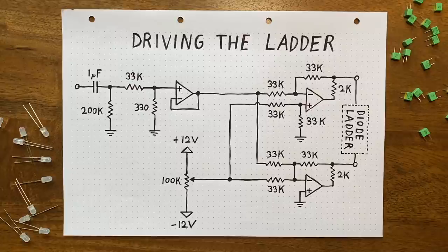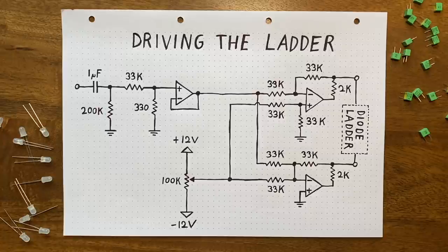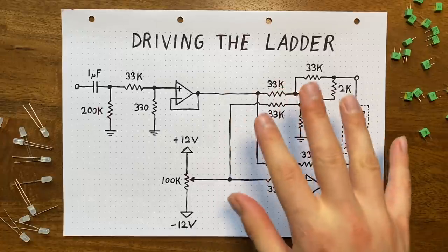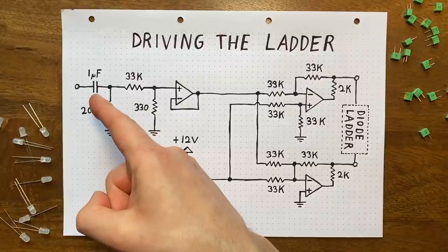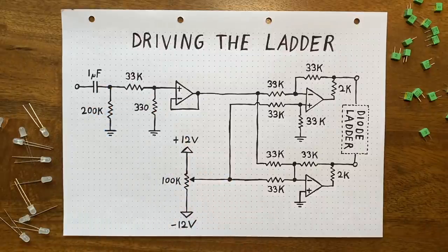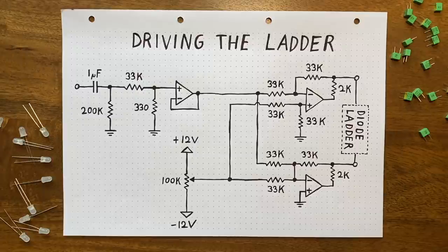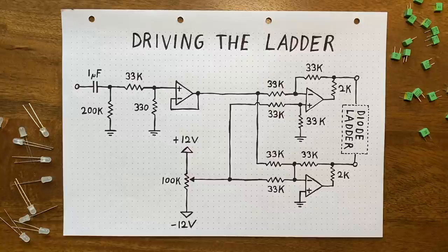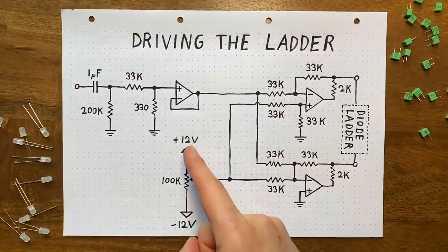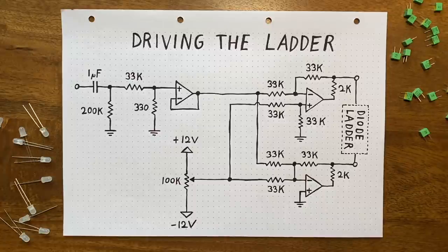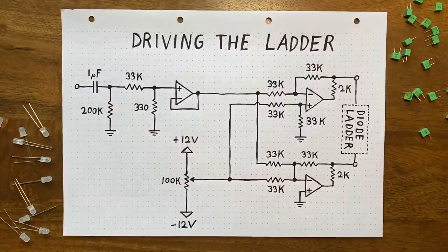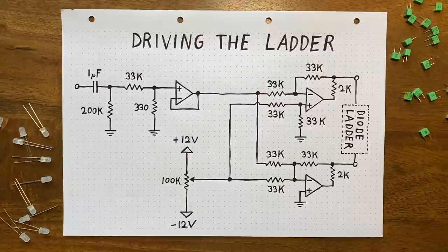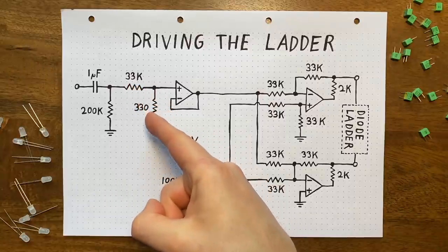Okay, so now that we know how to properly set up our diode ladder, we need to think about how we'll feed it our oscillation. Thankfully, doing that is pretty straightforward, even though this schematic might look a bit daunting at first. The basic idea is this. Over here, we have our input signal. And below that, we have a potentiometer set up as a variable voltage divider. This will be our control voltage source for now, so that we can test every voltage between plus and minus 12 volts. So, first of all, we'll send our input oscillation through AC coupling, to eliminate any offset voltage and center it around 0 volts. Then we'll shrink it down quite intensely, using a 33k, 330 ohms voltage divider.